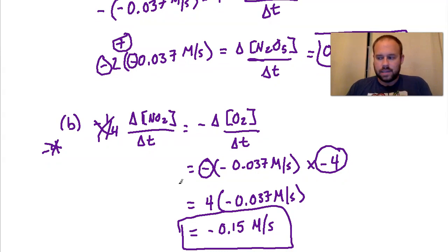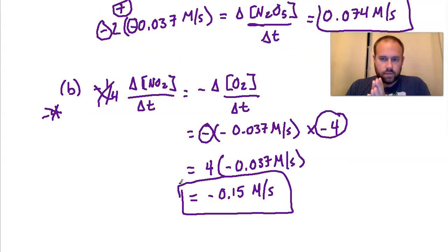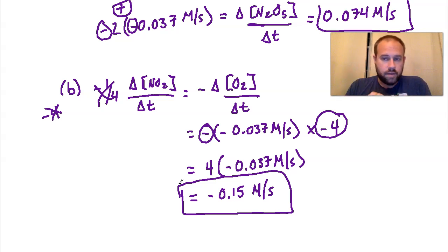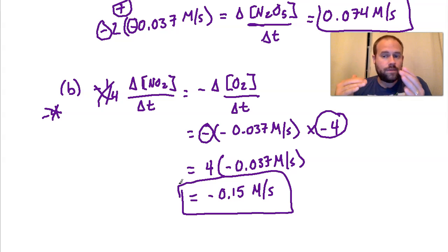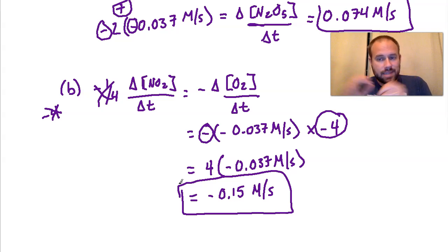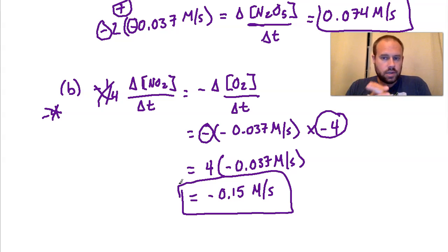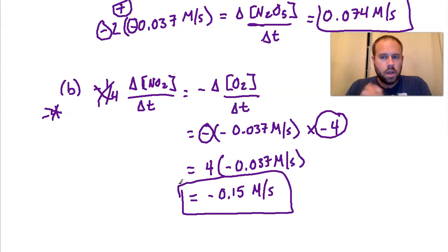That ties up everything we need to talk about here as far as rates. Two very important lessons: number one, you need to learn how to express rates for each individual portion of a reaction, including both reactants and products. Once you've done that, if you are handed information on one of those, you should be able to find information on the others by setting them equal. This is tricky because of the negative and positive value manipulation, but the more you practice, the easier it'll become.